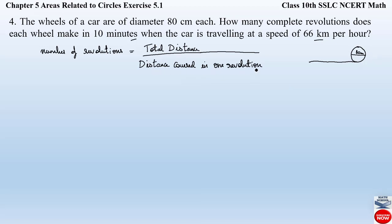What does 'distance covered in one revolution' mean? If you start from a point on the wheel, the distance covered to return back to that same point is nothing but the length of the circle — that is, the circumference of the circle. So the circumference gives the distance covered by the wheel in one revolution. The circumference of a circle is given by the formula 2πr, where π = 22/7, and r is the radius.